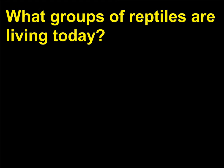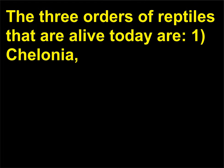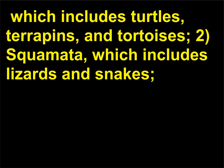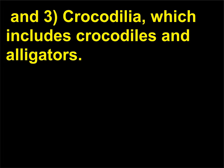What groups of reptiles are living today? They are: 1. Chelonia, which includes turtles, terrapins, and tortoises. 2. Squamata, which includes lizards and snakes. And 3. Crocodilia, which includes crocodiles and alligators.